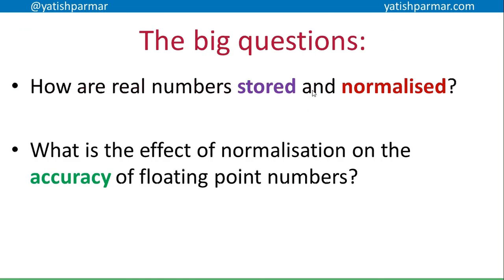So you should be able to answer now how a real number is stored and normalised — think about the convention where the first two numbers are different: it has to be a 1 and a 0, or a 0 and a 1, times 2 to the power of. And you should be able to explain the effect of normalisation on the accuracy — the magnitude of the number that can be stored, the accuracy in terms of the fraction part, and the effect of when storing 0. And I did it without sneezing — see you later.